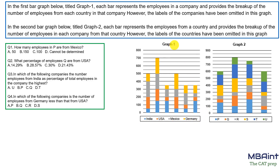In Graph One we have four different countries and six different companies. The breakup of number of employees according to country is given, but we do not know which company each bar graph belongs to. The labels of the companies have been omitted in the graph, so each bar belongs to a different company.